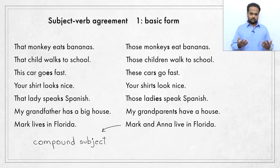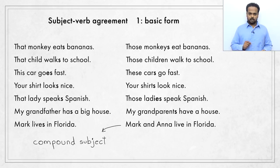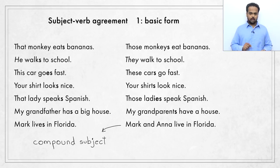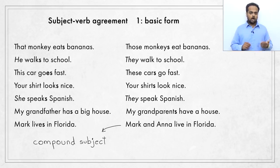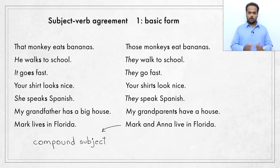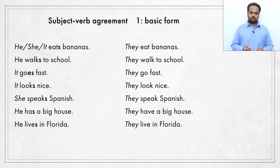There are a lot of nouns in these sentences, but in natural speech and writing we often use pronouns in the place of nouns to avoid repetition. For example, instead of 'that child,' I can say 'he walks to school,' and instead of 'those children,' 'they walk to school.' In the place of 'that lady,' I can say 'she speaks Spanish,' and for the plural, 'they speak Spanish.' 'This car goes fast' can be rewritten as 'it goes fast,' and 'these cars' becomes 'they go fast.'